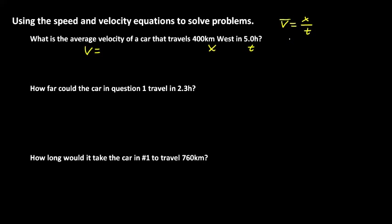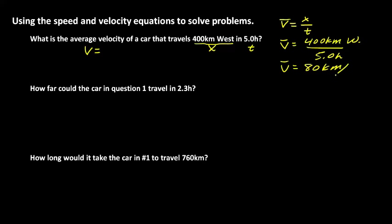Now if we plug some numbers in, we have average velocity equals x, the displacement, which is 400 kilometers west, divided by 5.0 hours. We don't want to forget to put that direction in there. When we work that out, 400 divided by 5 gives us 80 kilometers per hour west. Remember that this is a vector quantity — it has a direction, so you can't leave the direction out.